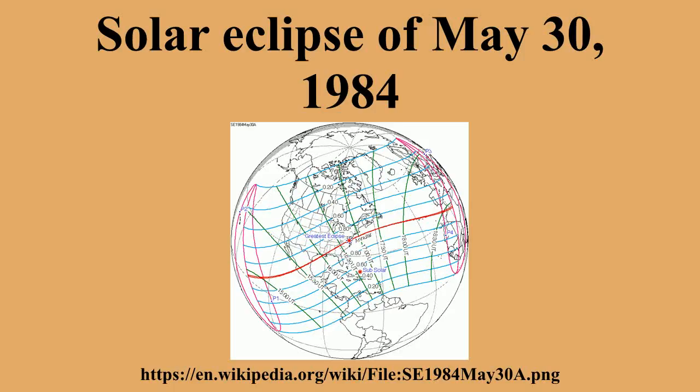Related eclipses. Each member in a semester series of solar eclipses repeats approximately every 177 days and 4 hours at alternating nodes of the Moon's orbit. Note: partial solar eclipses on January 25, 1982 and July 20, 1982 occur in the previous lunar year eclipse set.